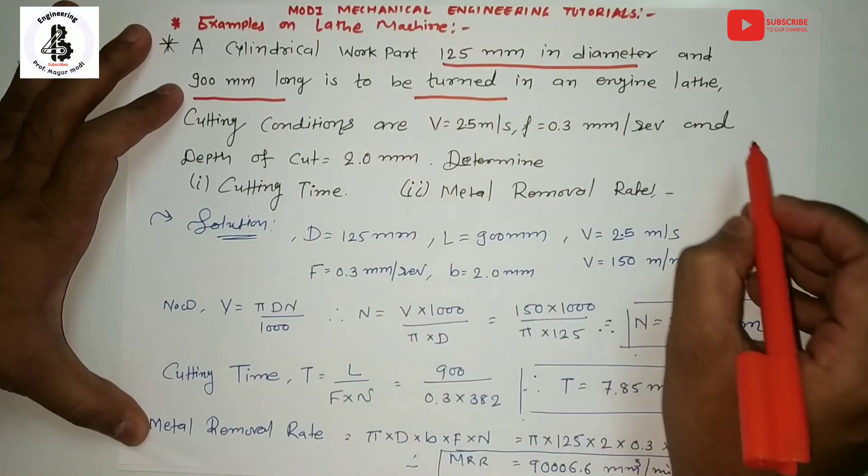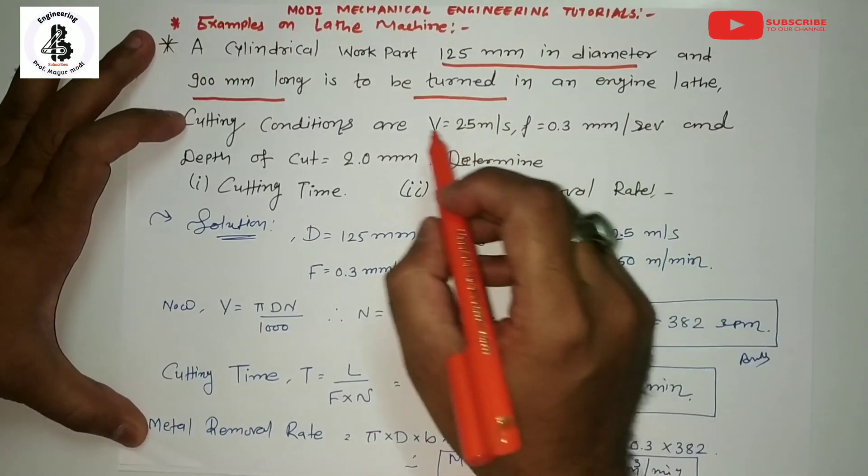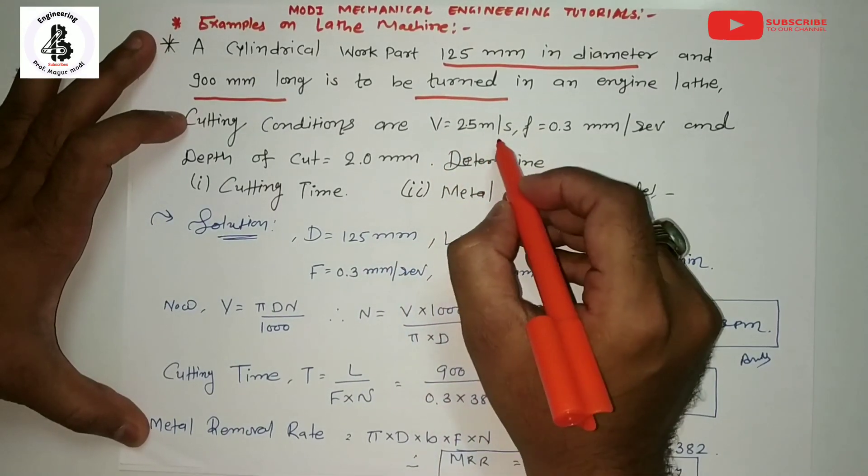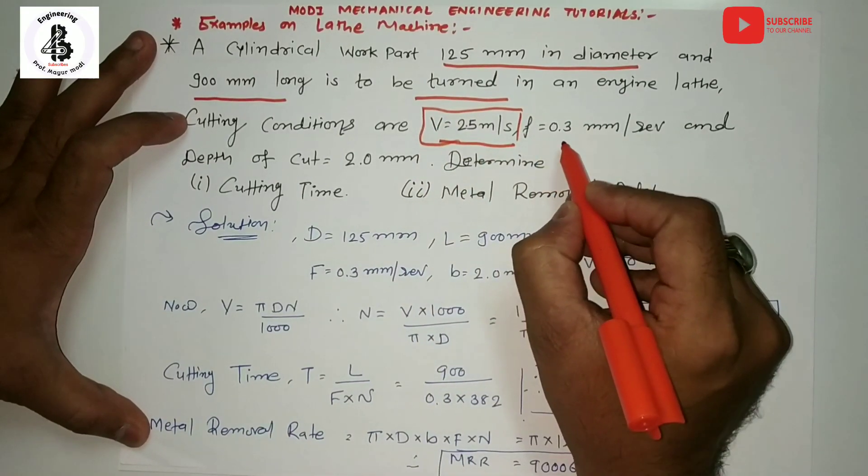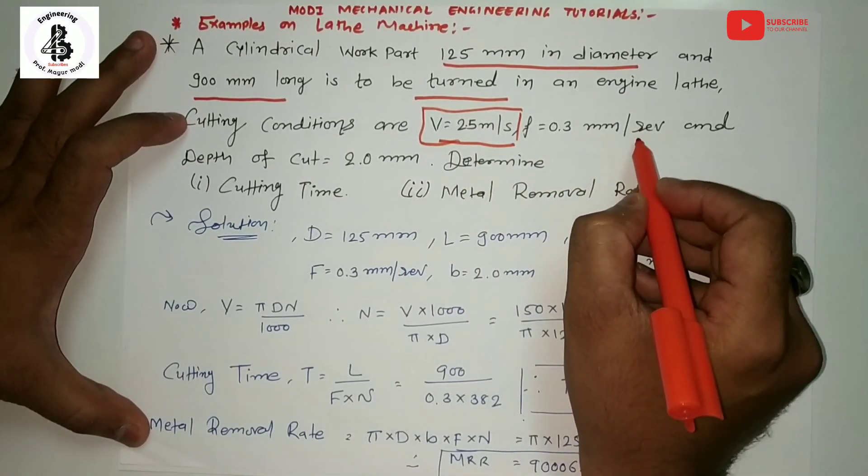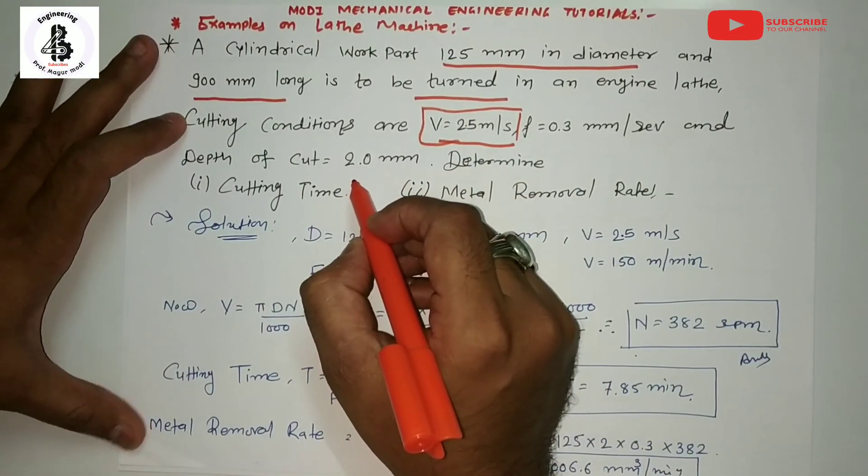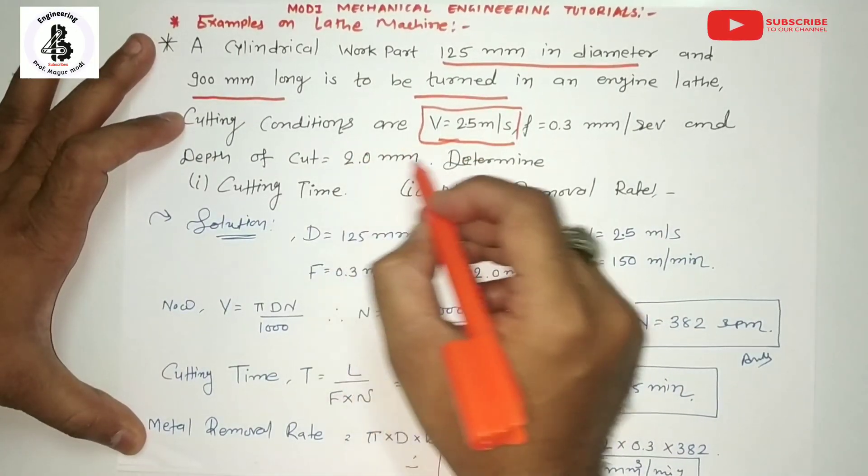The cutting conditions are: speed V = 2.5 meter per second, feed f = 0.3 mm per revolution, and depth of cut = 2.0 mm.